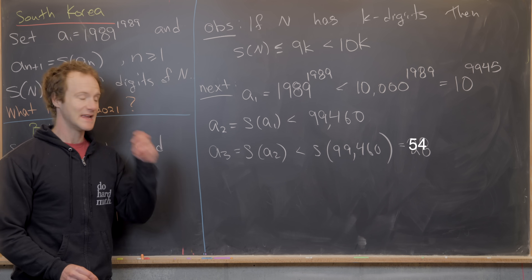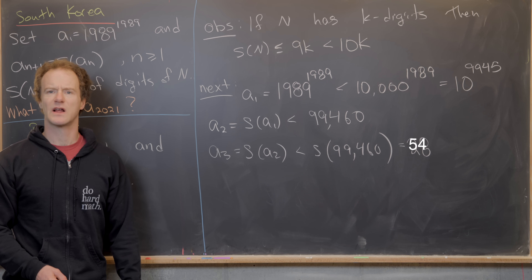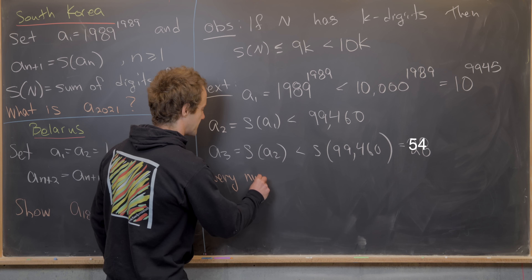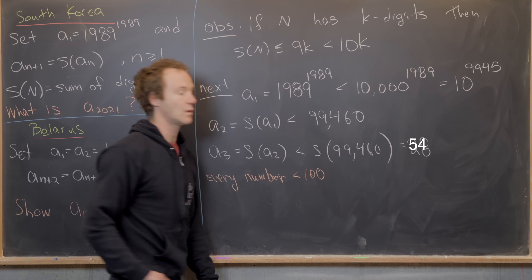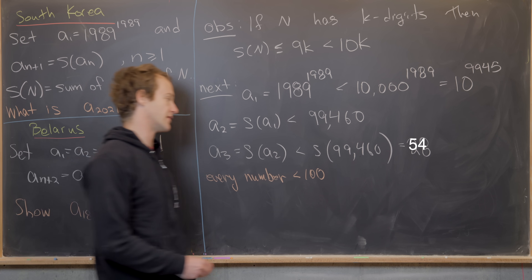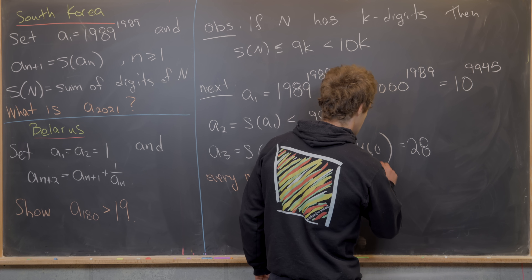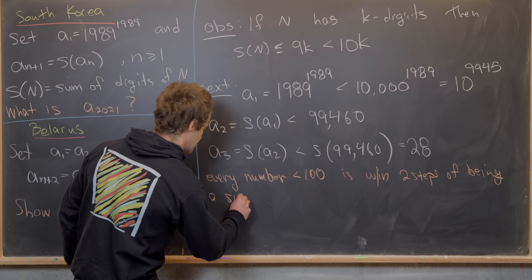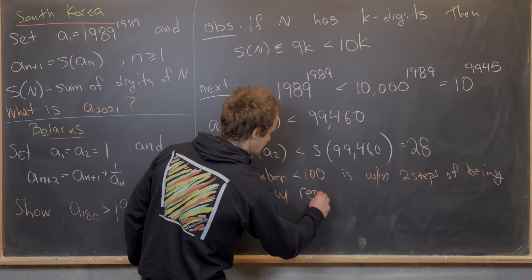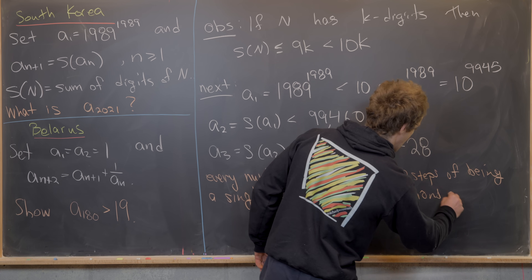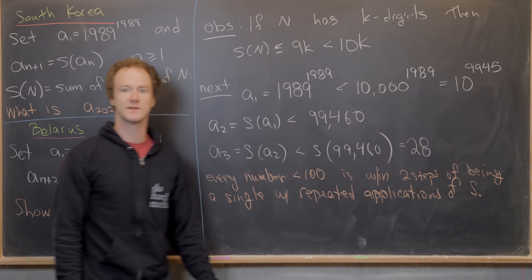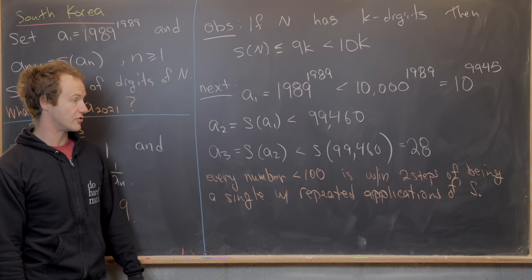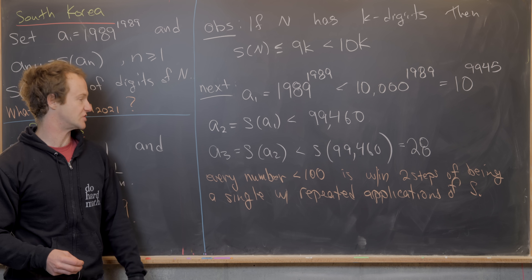Now for another observation: every number less than 100 — and 28 is definitely less than 100 — is within two steps of being a single digit with repeated applications of S. In other words, we can apply S to any number between 1 and 100 twice and it'll be a single-digit number.